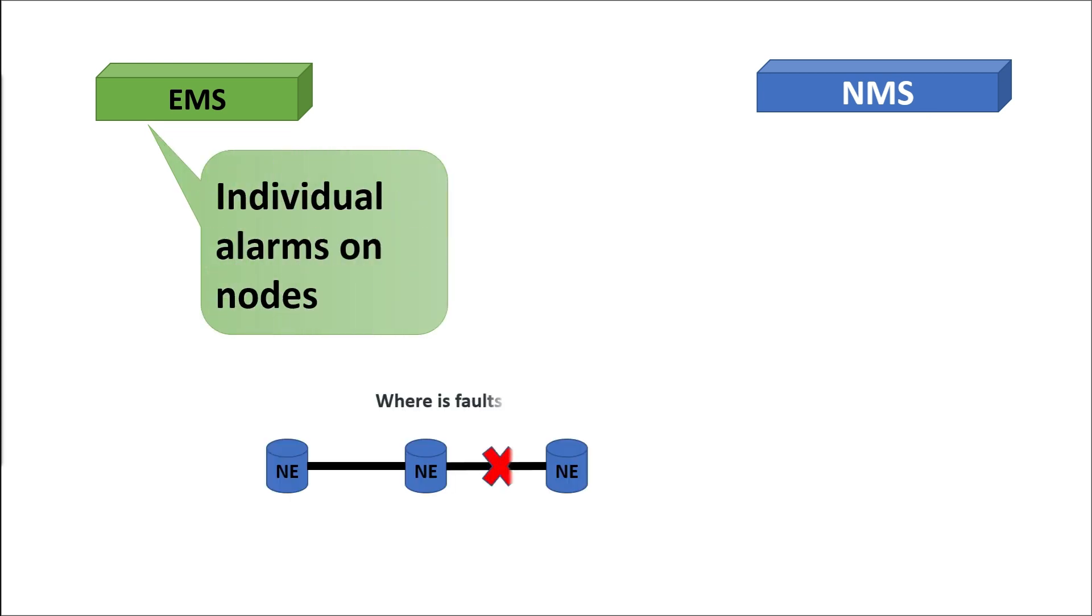EMS can give individual alarms on nodes but cannot identify faults at different nodes, and therefore cannot predict how a fault is affecting communication links, leading to non-functioning of the whole network.